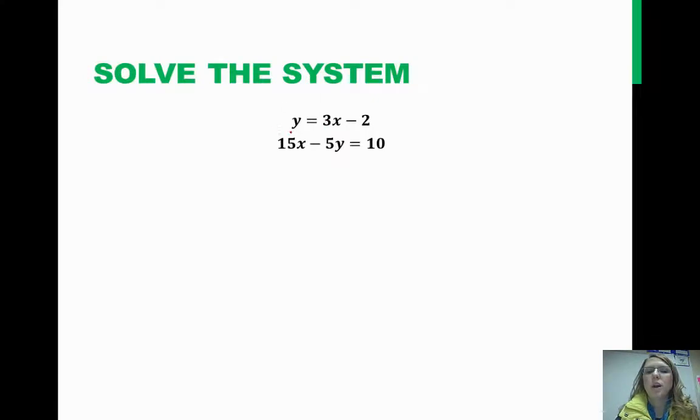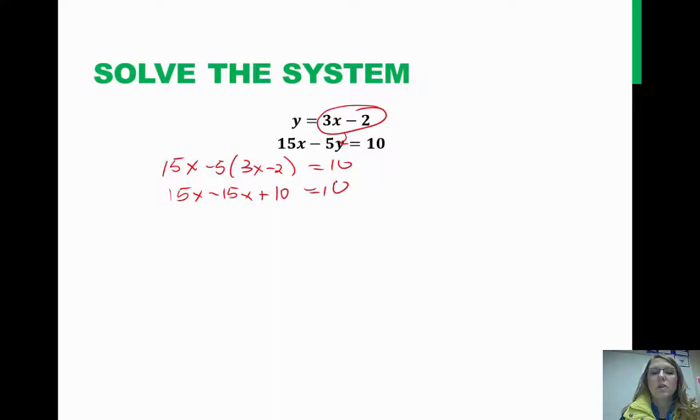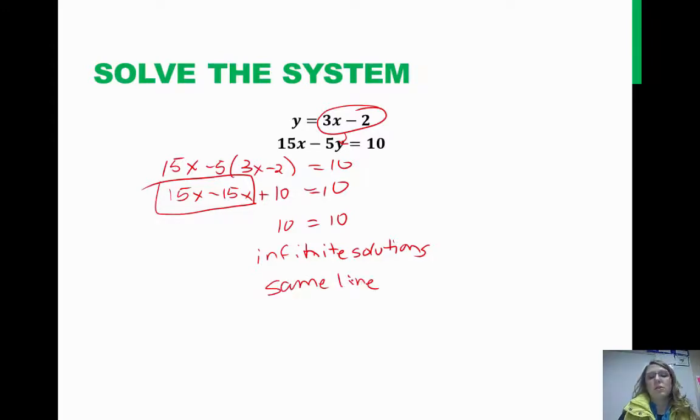Let's look at this example. Notice that we have y equals 3x minus 2 and 15x minus 5y equals 10. This one's already solved for y, so substitution would be the easier method of solving the system. So, let's do that. 15x minus 5 times, and I'm going to take this entire bit right here and substitute in for y. So, this will be 3x minus 2 equals 10. We have negative 15x. Negative 5 times negative 2 would be a positive 10, and notice that my x's here completely drop out. 15x minus 15x is 0. So, I have 10 equals 10. This means I have infinite solutions, and it's really the same line if you look at the graph.